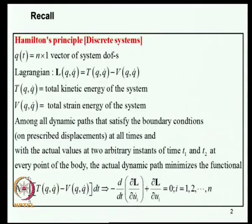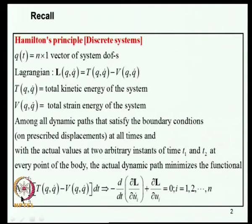In the previous lecture we looked at how to set up governing equations of motion using Hamilton's principle. We defined a quantity known as the Lagrangian, which is the difference of kinetic energy and potential energy. We defined an integral known as the action integral, and according to Hamilton's principle, motion takes place such that this action integral is rendered minimum. The condition for stationarity is obtained as the Lagrange's equation.